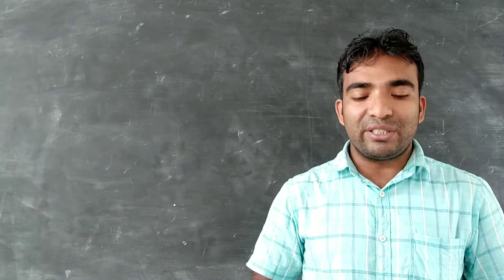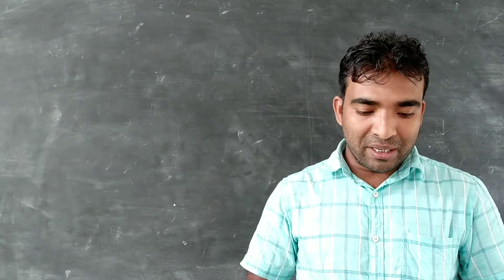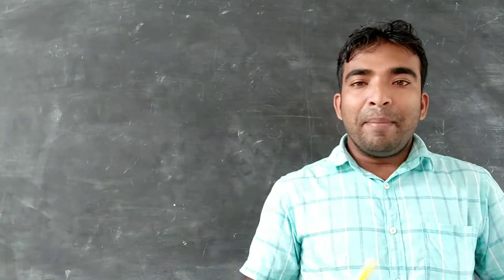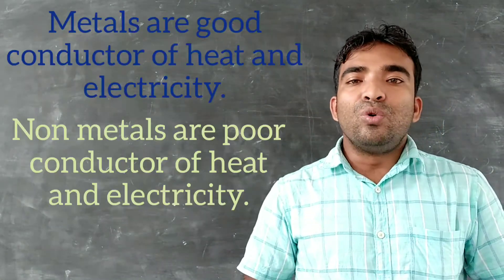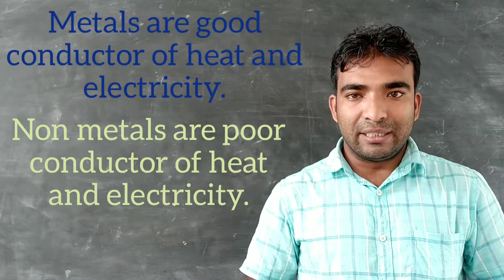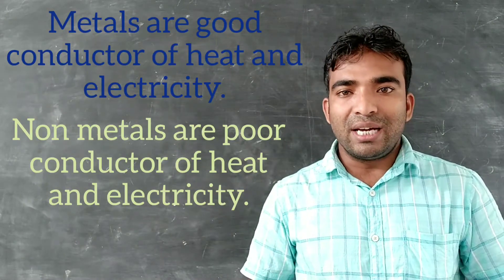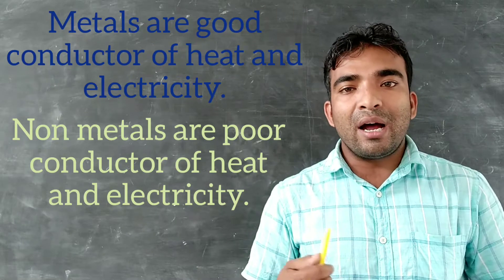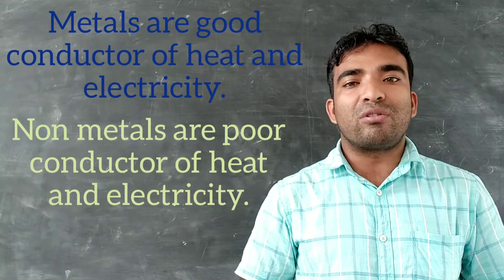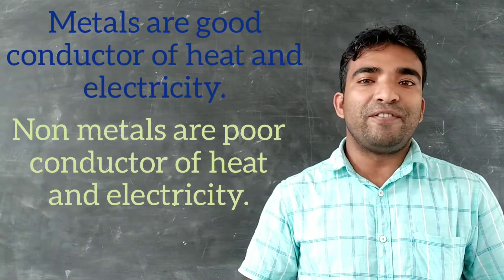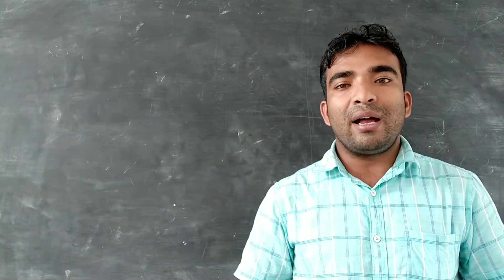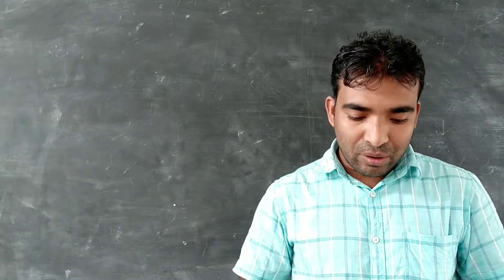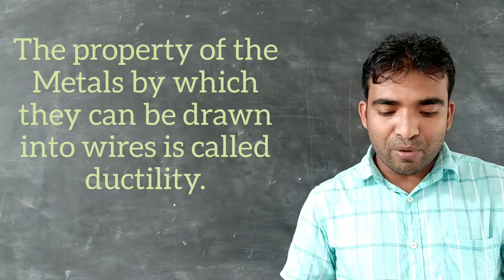The second physical property is that metals are good conductors of heat and electricity. On the other hand, some materials are very poor conductors of heat and electricity, and these can be considered non-metals.